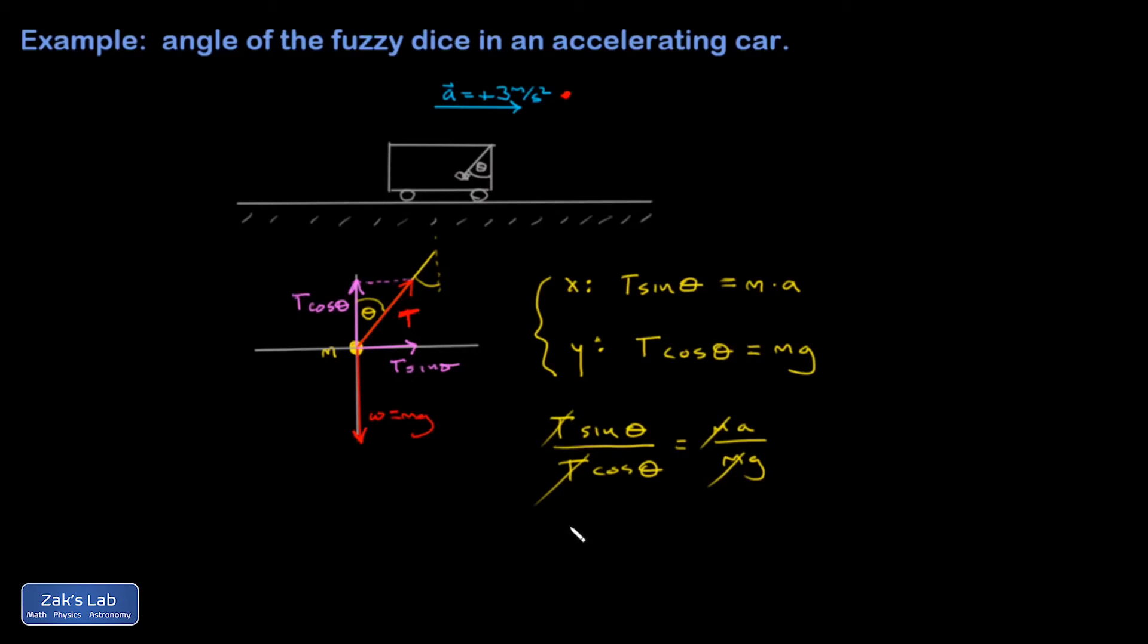And this function over here on the left, sine theta over cosine theta, that's tangent theta. So tangent theta equals a over g. I could even just get a general solution and then plug in. So theta is the angle whose tangent is a over g.